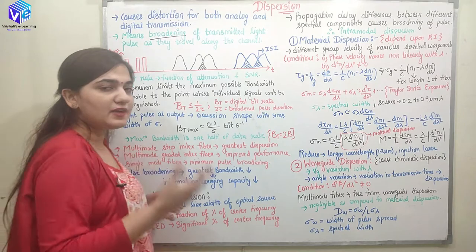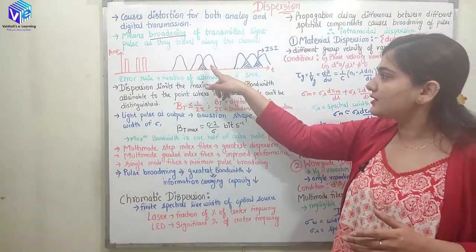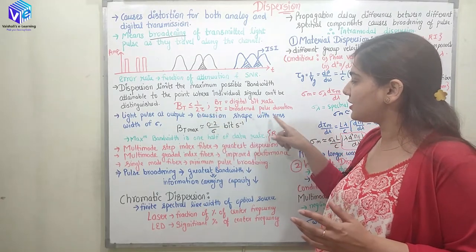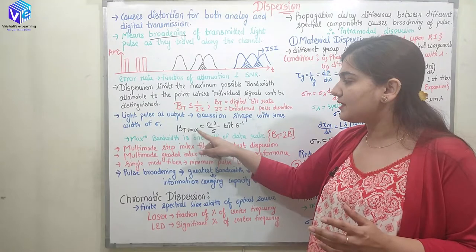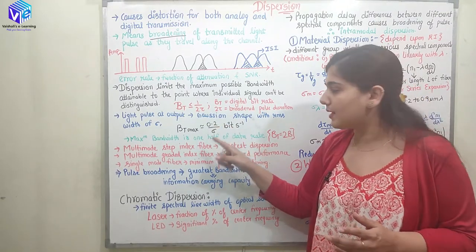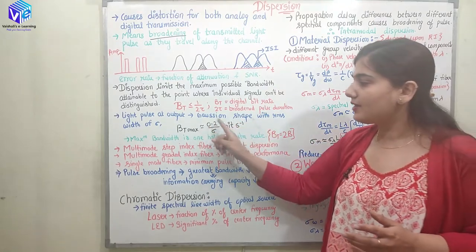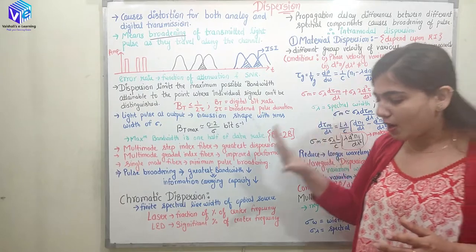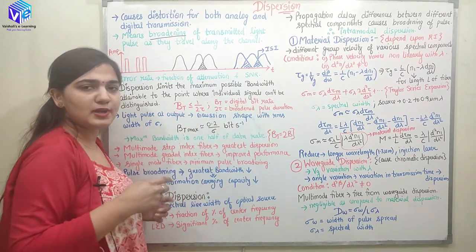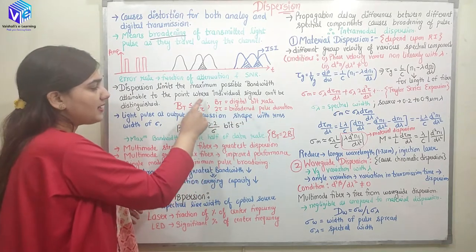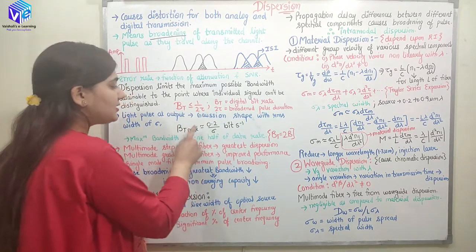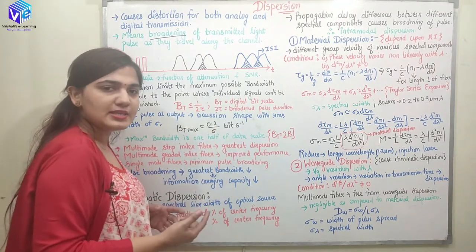If the light pulse at the output follows the Gaussian curve — approximately following the Gaussian curve after the broadening out — then if the light pulse at the output has a Gaussian shape with RMS width of sigma, the maximum bit rate BT_max will be nearly equal to 0.2 upon σ bits per second. So this is how I can calculate the bit rate if I have any broadened pulse. If I know the broadened pulse duration, I use this formula to find the maximum bit rate.